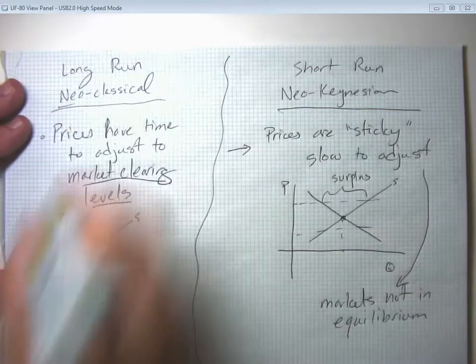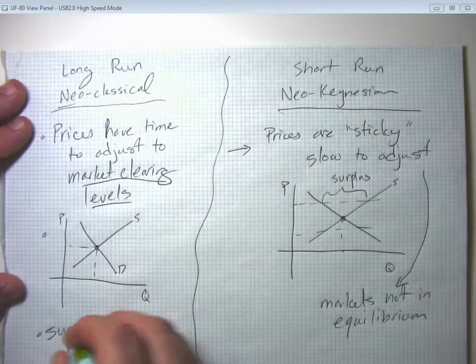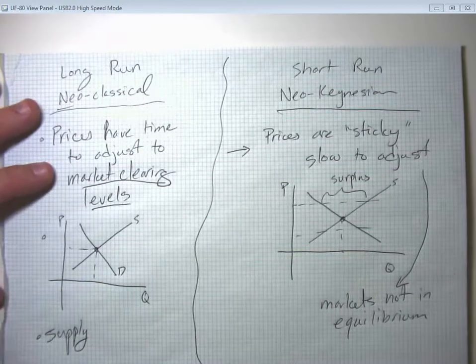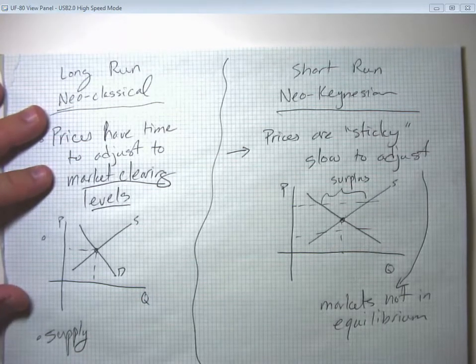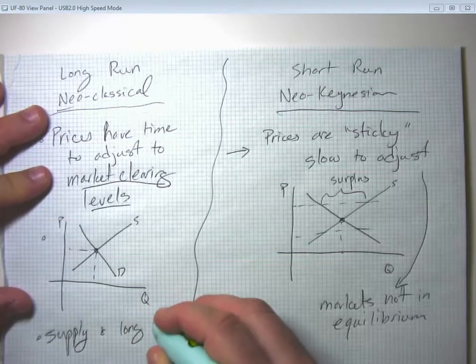The neoclassical analysis tends to put more emphasis on supply, things like natural resources and human capital. Because in the long run, if we want to worry about long run economic growth, those are the things that matter a lot.